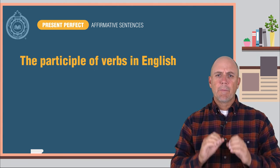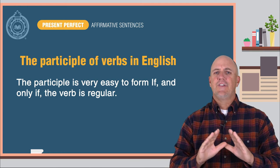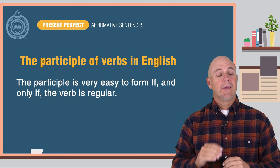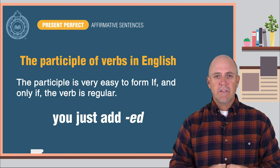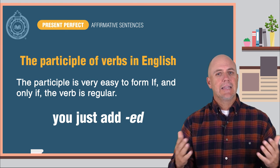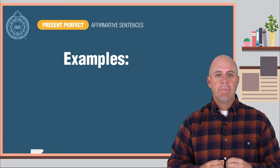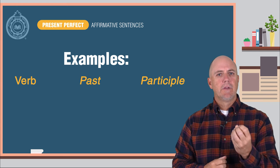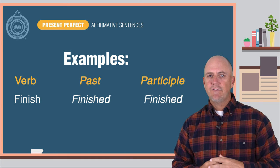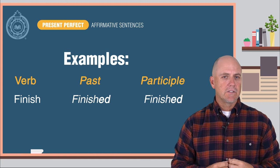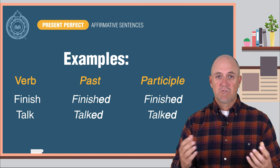Next, the participle of verbs in English. The participle is very easy to form if and only if the verb is regular. If the verb is regular, you just add -ed, like in the past tense. That's simple. Here are a few examples. Verb: in the present — finish; in the past — finished; in the participle — finished. Talk, talked. Simple, right?